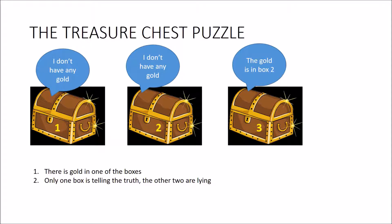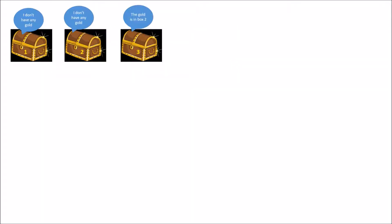This is called the treasure chest puzzle. A person walks into a cave and sees three chests. One contains a pot of gold. The first chest says I don't have any gold, the second says I don't have any gold, and the third says the gold is in box two. We have two clues: the gold is in one and only one of the boxes, and only one box is telling the truth — meaning the other two are lying. We'll use propositional logic to solve this.